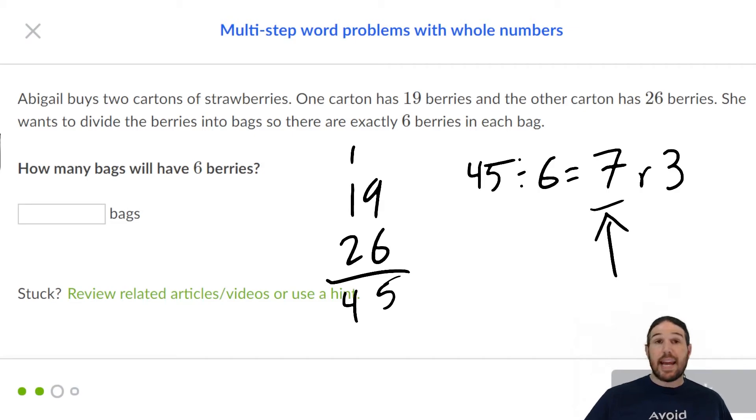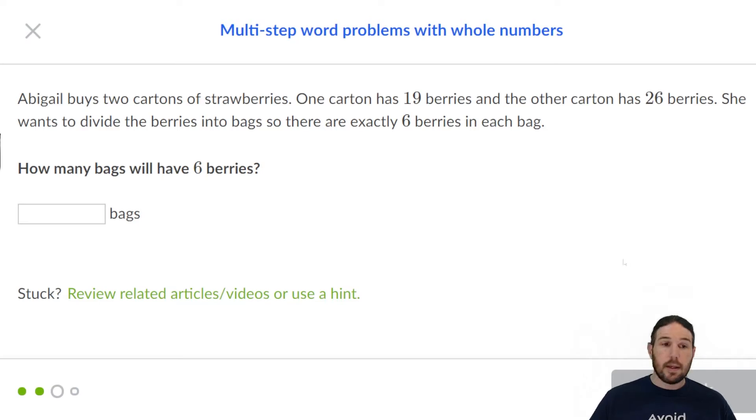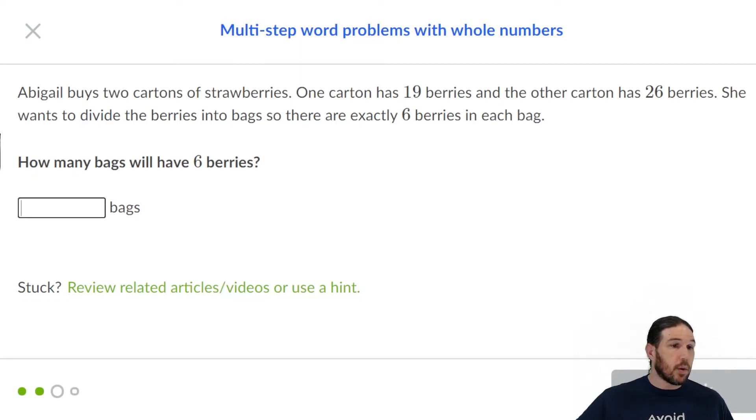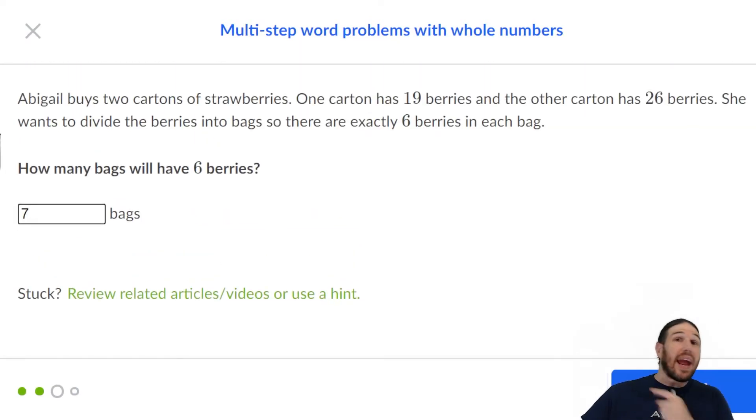And that would leave 3 left over. So I can take those 45 strawberries and I can break them up into 7 bags of 6 and then there will be 3 left over. Very important that you answer the question that's asked. It asks how many bags will have 6 berries.